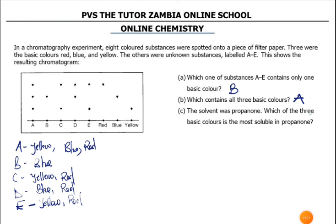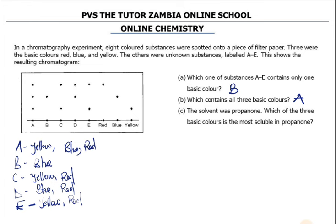The solvent was propane. Which of the three basic colors is the most soluble in propane? To know which one was more soluble in propane, you look at their solubility distances — the distances each color traveled on the chromatogram.